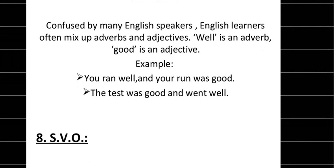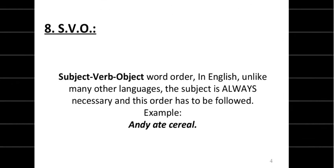The next rule is about subject-verb-object word order. In English, unlike many other languages, the subject is always necessary and must come first. The structure of English is subject-verb-object — you must start a sentence with a subject, and there must always be a subject in every sentence.